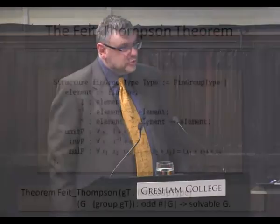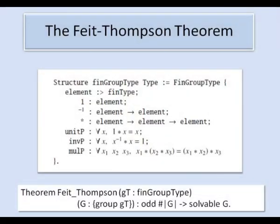Their paper was 255 pages long which was unprecedented in the subject at the time. And another 50 years later, late in 2012, a team led by Georges Gonthier has formalised this proof in an interactive theorem proving computer system called Coq and we now have a computer proof of the Feit-Thompson theorem.